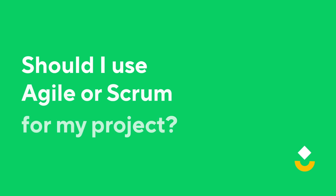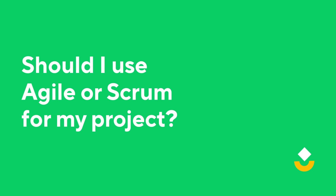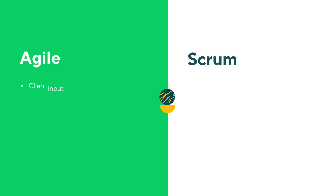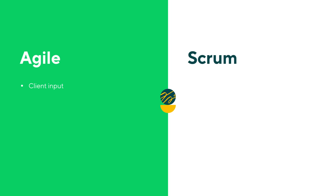So now you know the difference between Agile and Scrum, but how can you tell which to choose for your project? There are many advantages to both frameworks, and choosing the right path depends on your team, your organization, and the type of project you're working on. If client input is a top priority, Agile is the way to go. But if speed is more important for your project, Scrum is a better choice.